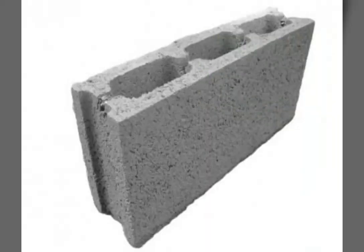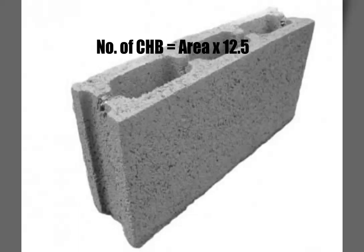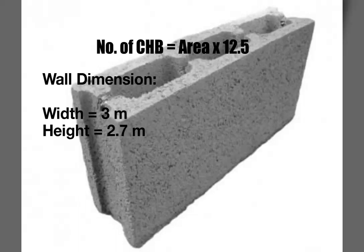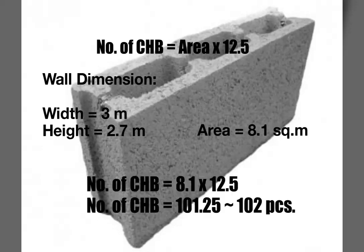First, you need to calculate the quantity for concrete hollow blocks, and you can do that by multiplying the area of the proposed wall by 12.5. For example, we have the wall dimensions as 3 meters wide and 2.7 meters high. Its area is equal to 8.1 square meters. Therefore, multiplying 8.1 square meters by 12.5, you will get 101.25 pieces, or you may consider it as 102 pieces of concrete hollow blocks.